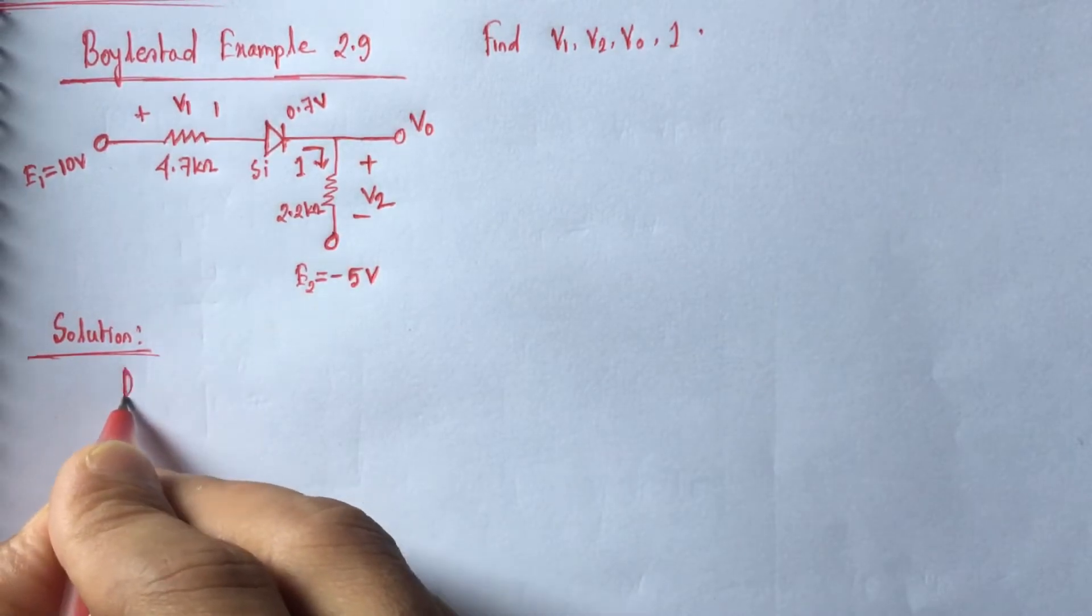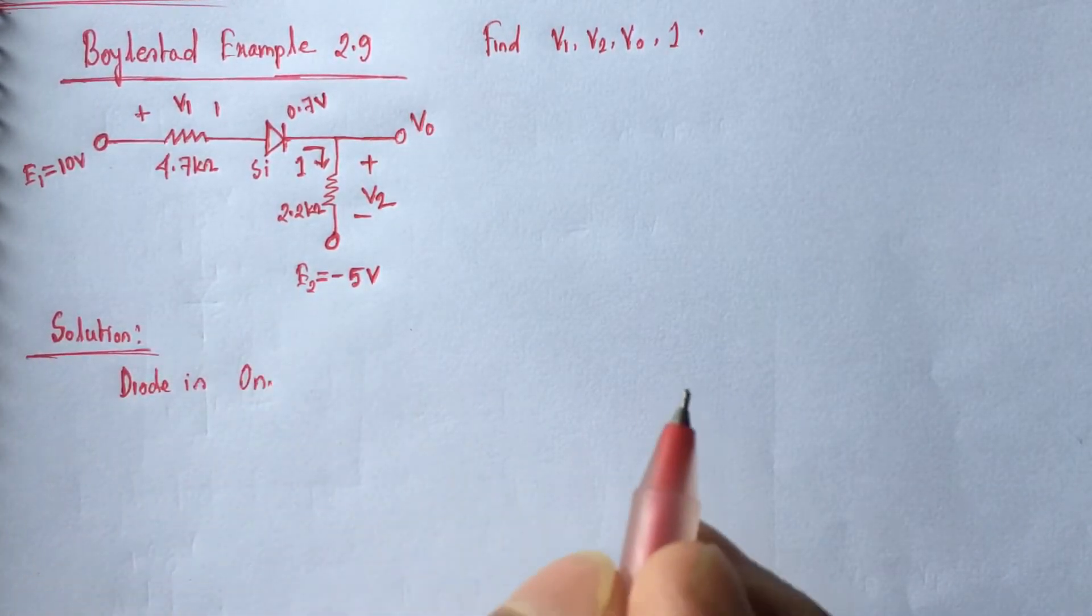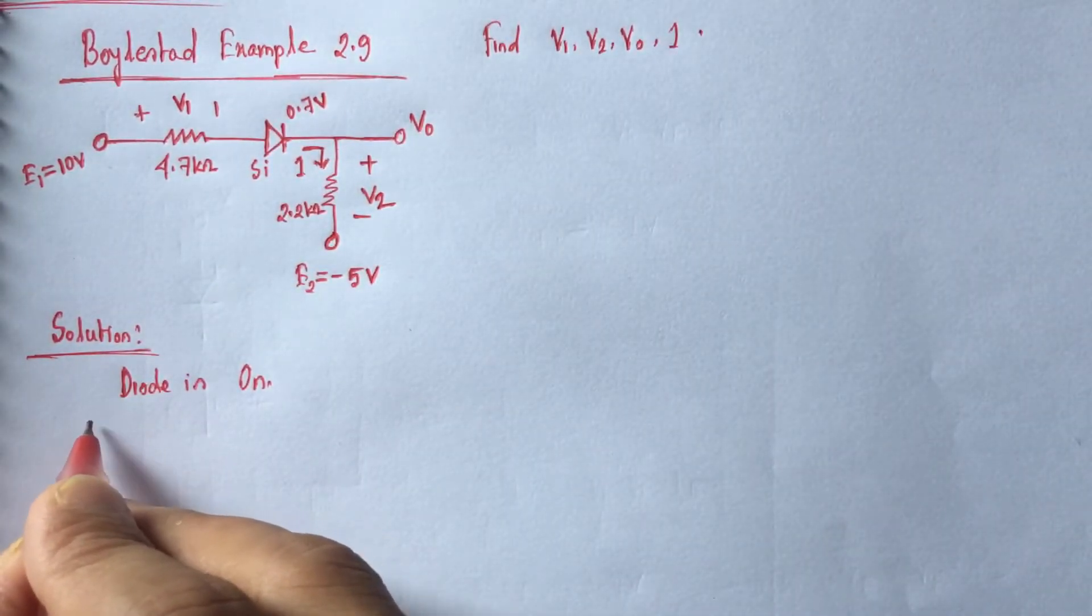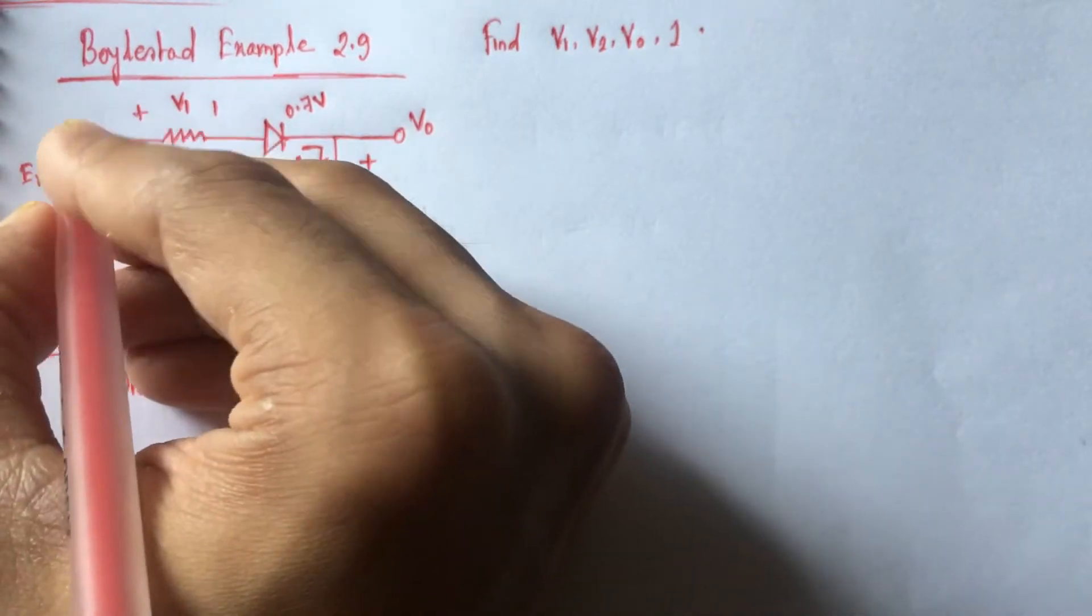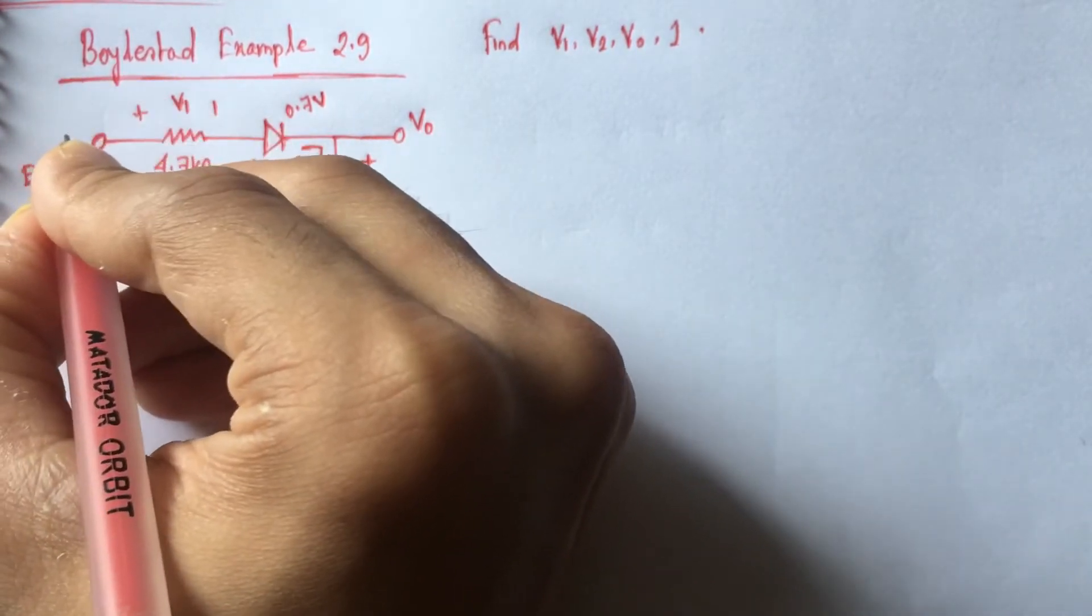So diode is on. The silicon diode has a drop of 0.7 volt.